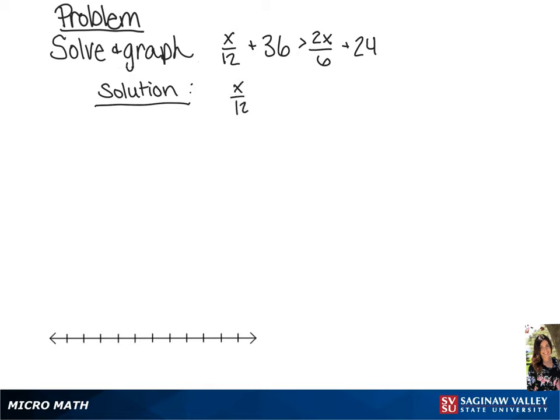We have x over 12 plus 36 is greater than 2x over 6 plus 24. We're going to start by multiplying each side of this inequality by 12 in order to clear the fraction.